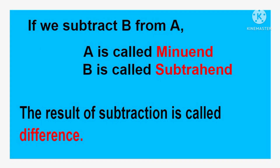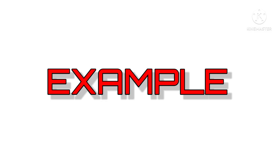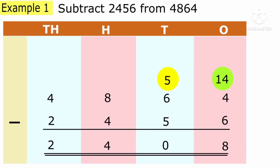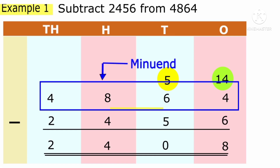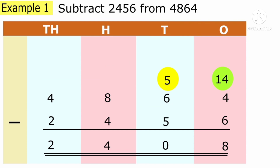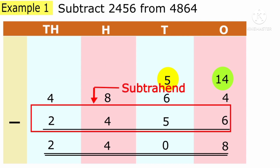If we subtract number B from number A, then A is called the minuend, B is called the subtrahend, and the result is called the difference. In this example, 4,864 is the minuend, 2,456 is the subtrahend, and 2,408 is the difference.